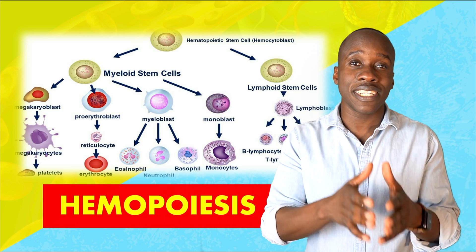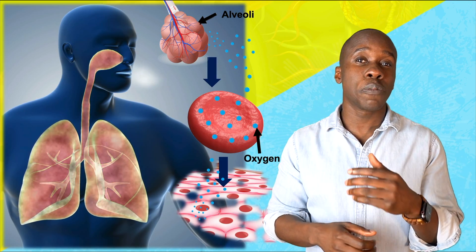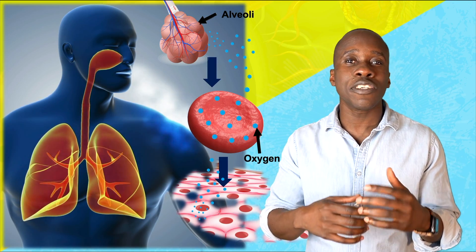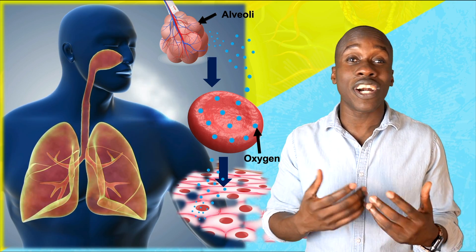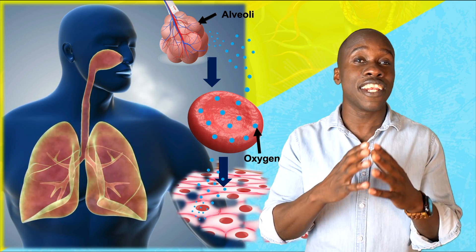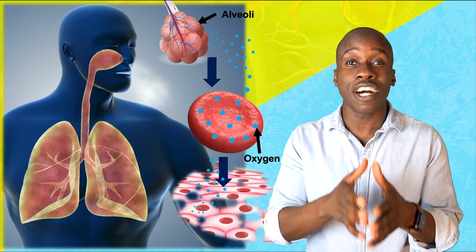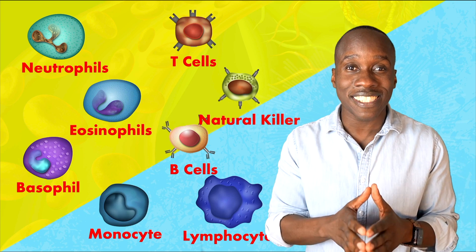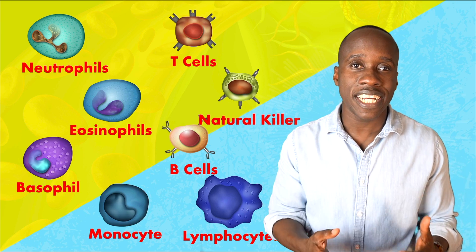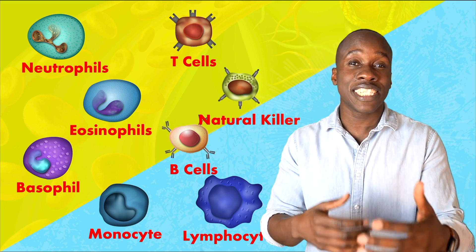Let's talk about how white blood cells and red blood cells differ. When we looked at how red blood cells were produced, we saw that at a certain point in the process, the differentiated cells got rid of organelles like the nucleus, the endoplasmic reticulum, and others so that they can be highly specialized for their function of delivering oxygen. White blood cells are different in that they're the one category of cells in the blood that are complete cells - they keep all of their organelles that you'd see in a typical body cell.